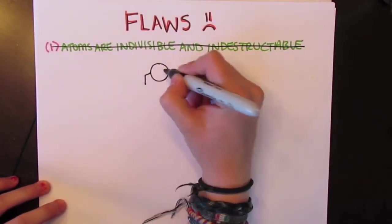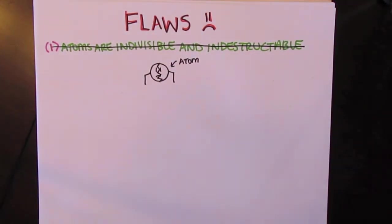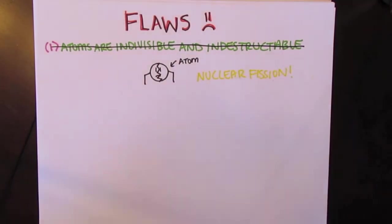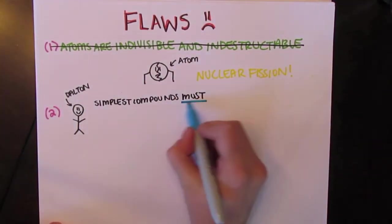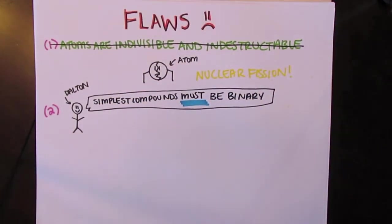The first component of Dalton's atomic theory was later proved inaccurate. With our current knowledge in science, we know that atoms can be divided and destroyed with the use of nuclear fission. Dalton assumed that the simplest compound of two elements had to be binary and formed from atoms in a simple one-to-one ratio.